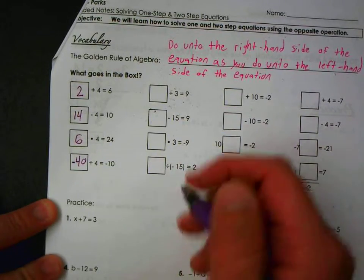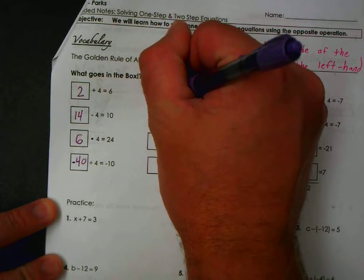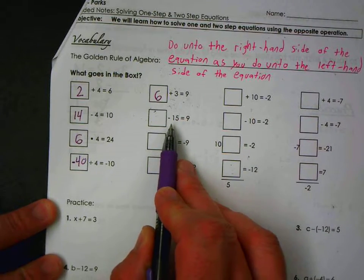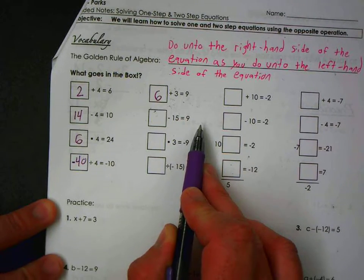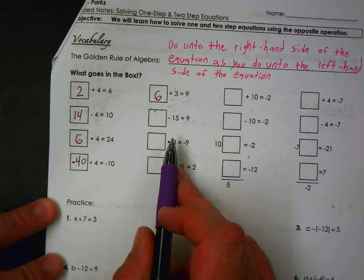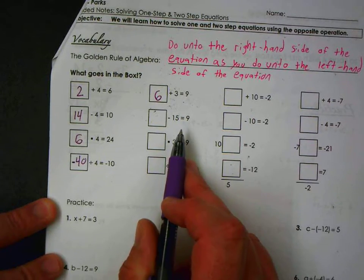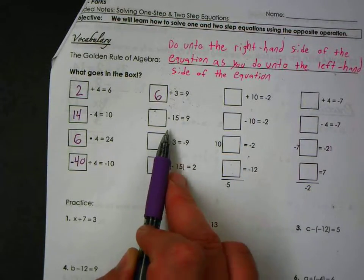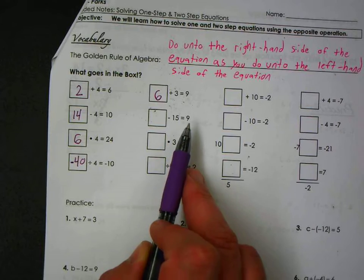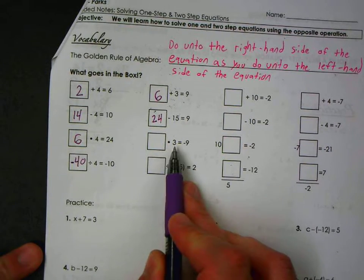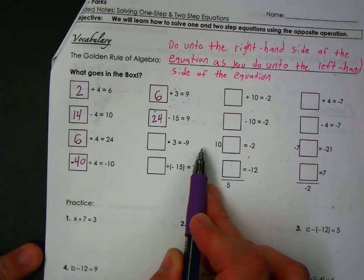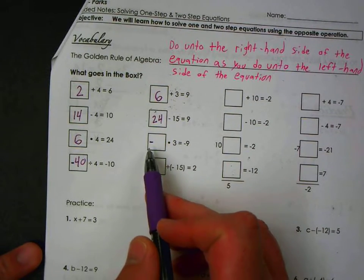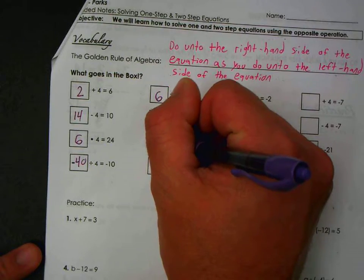And you may not realize it but you're all doing algebra at this very moment. What number plus three is nine? Six. What number when you subtract fifteen do you get nine? Twenty-four.